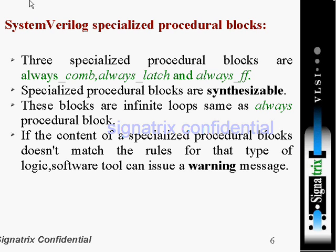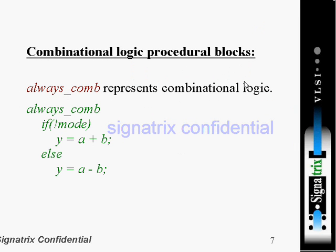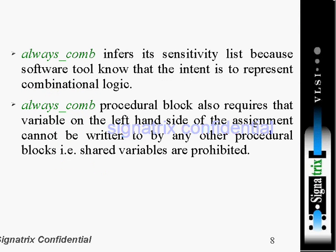For example, if you want to infer a flip-flop but inside you are using blocking statements, it will give you a warning because you have mentioned that your intention is to get a flip-flop. Now, if our intention is to get combinational logic, we use always_comb. Using this keyword, it will automatically infer a sensitivity list — in Verilog 2001 we put star, in 1995 we had to mention all inputs. With always_comb, the tool automatically infers the sensitivity list because it knows the intent is to represent combinational logic.